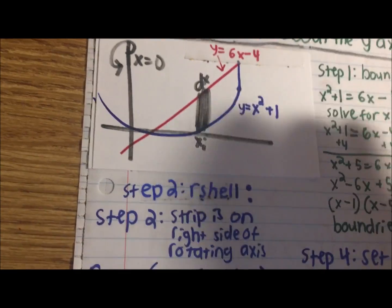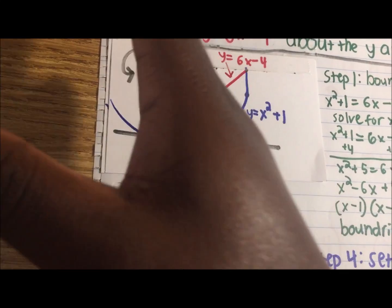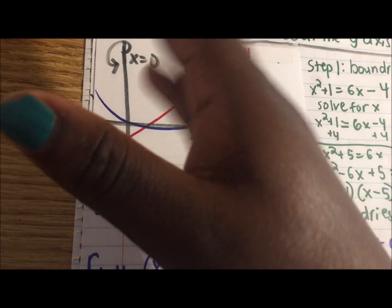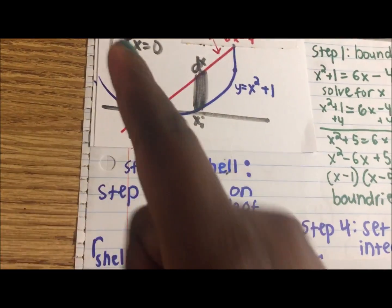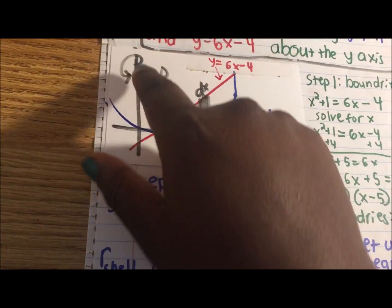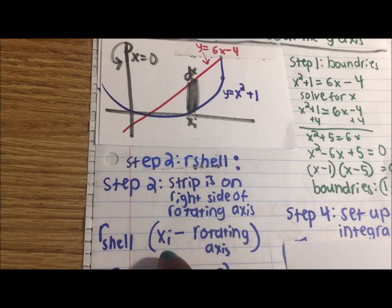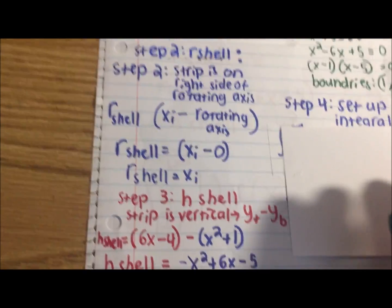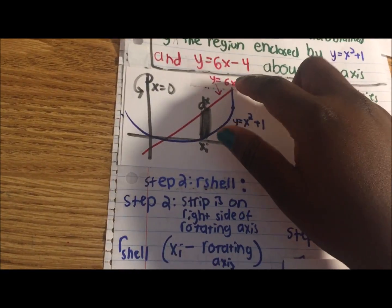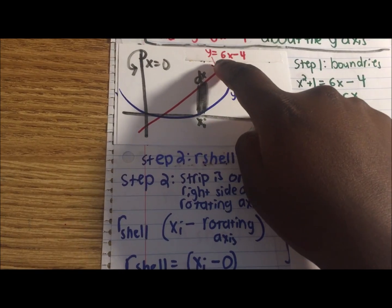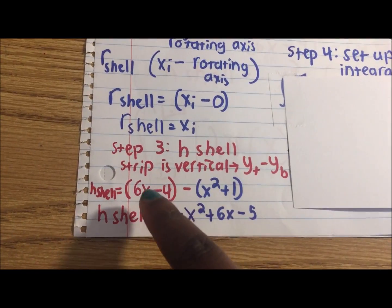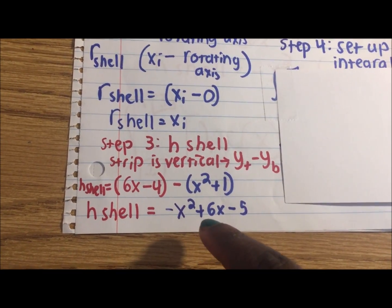Step two, r_shell. The rotating axis is the y-axis and the strip is on the right side of the rotating axis, which means we use the equation xi minus the rotating axis. The rotating axis is x equals 0 because x = 0 is the y-axis. So xi minus 0 means r_shell is just xi — or just x when integrating. Step three, h_shell. The strip is vertical, so we do y_top minus y_bottom. Y_top is y = 6x − 4 and y_bottom is y = x² + 1. So h_shell is (6x − 4) − (x² + 1), which simplifies to −x² + 6x − 5.